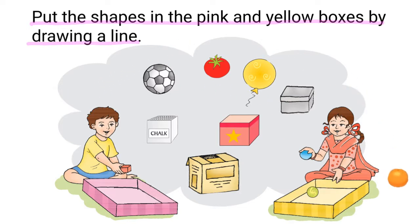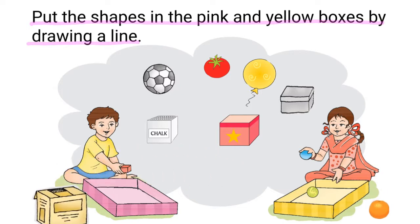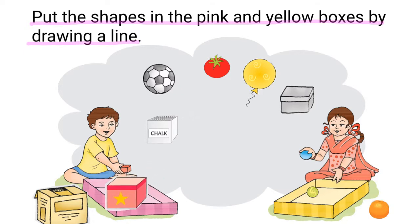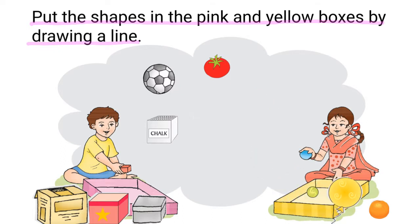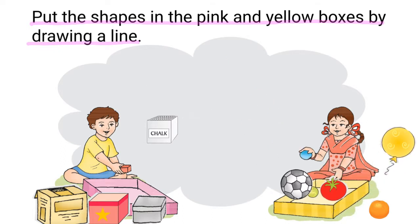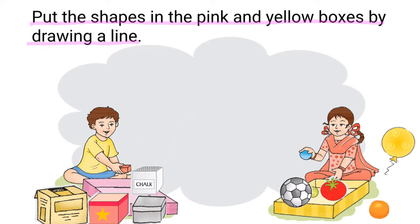The orange is round. The carton is square shaped. This box is also square shaped. The balloon is round. The tomato is round. The football is round. And the chalk box is square shaped.